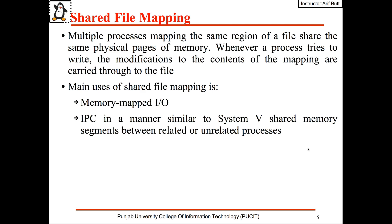There are two types of file mapping: shared and private. In shared file mapping, multiple processes mapping the same region of a file share the same physical pages of memory. When a process writes, the modifications are carried through to the file. The main uses of shared file mapping are memory-mapped IO and IPC.